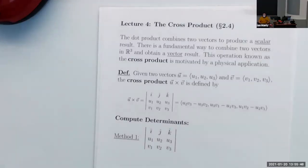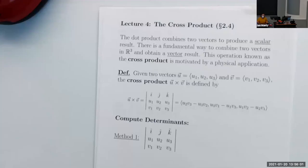Welcome to our fourth lesson of calculus three. Last time we learned about a way to combine two vectors together in a sort of multiplication called the dot product. The dot product combined two vectors together and gave us a scalar quantity. That scalar was roughly a measure of how parallel two vectors are to one another.